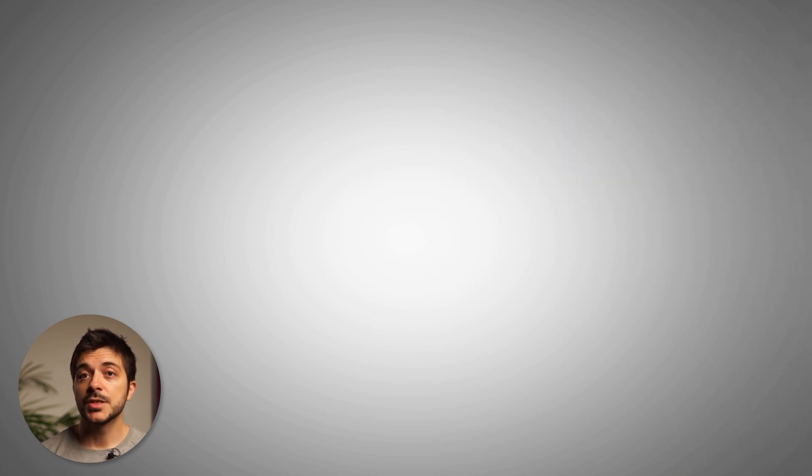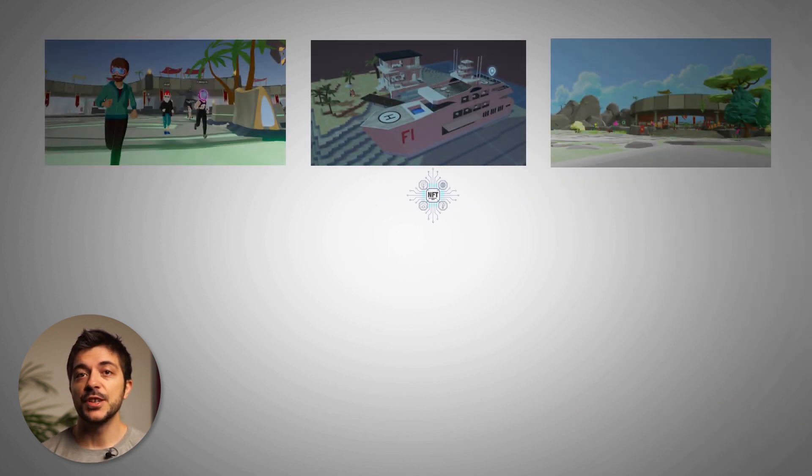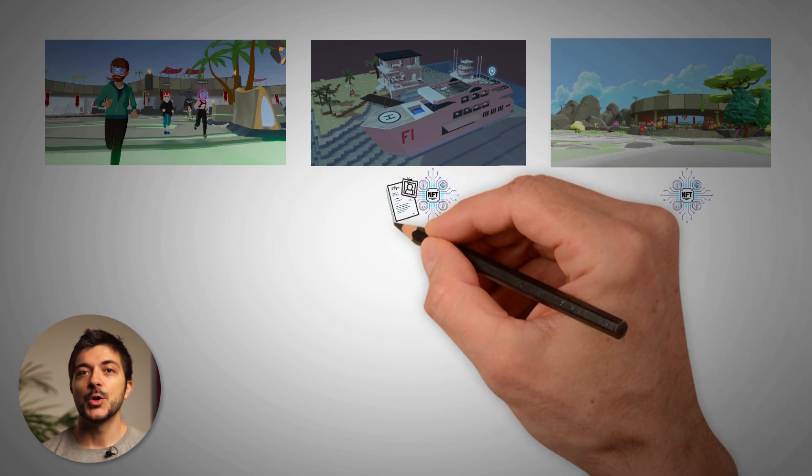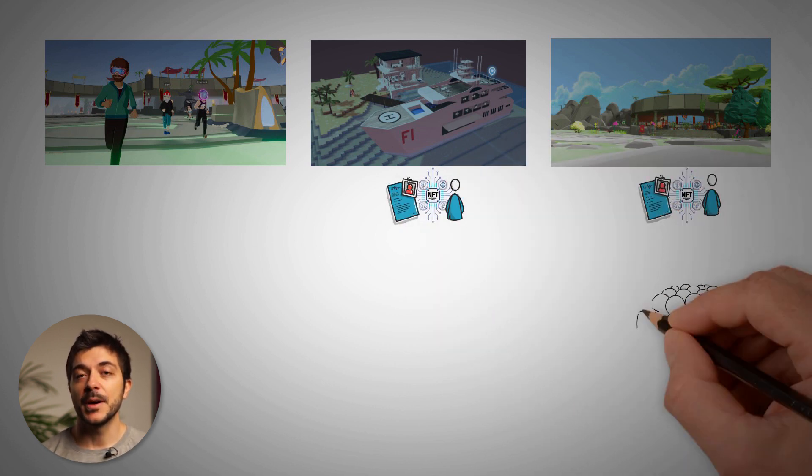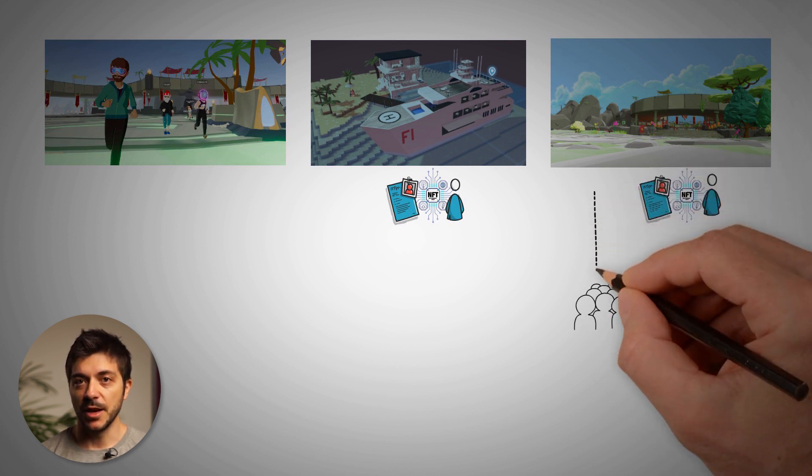In this huge decentralized Metaverse there is already virtual land, a yacht or a building that you can own as an NFT and rent it to other users and then you just make a passive income from it just like in real life.